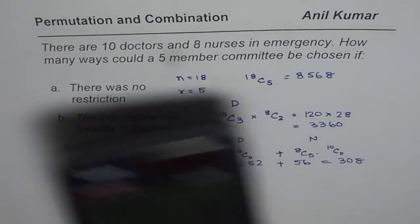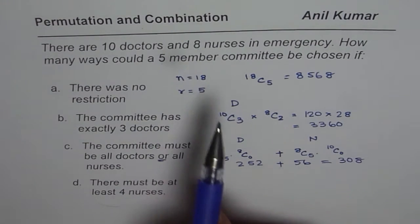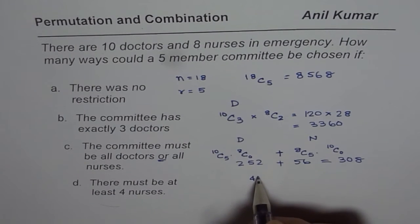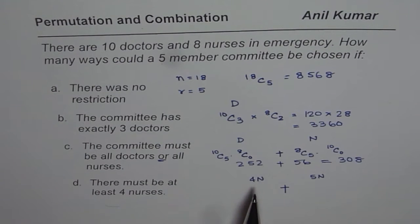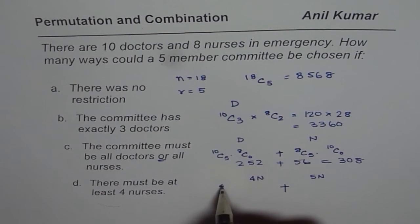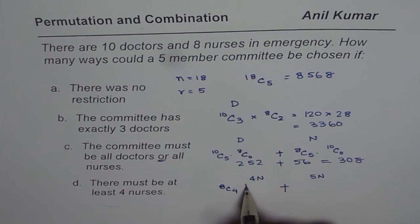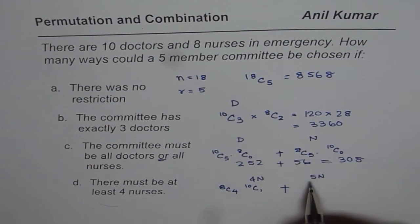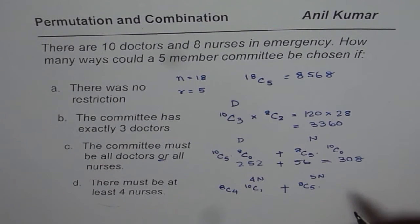Part D: there must be at least four nurses in a committee of five. At least four nurses means either four nurses or five nurses, and since it's 'or' we add. If four nurses are selected from eight, that is 8C4. Since we need a committee of five, one doctor is selected from ten, giving 10C1. For five nurses, we select five from eight: 8C5, and the number of doctors selected is zero, so 10C0.